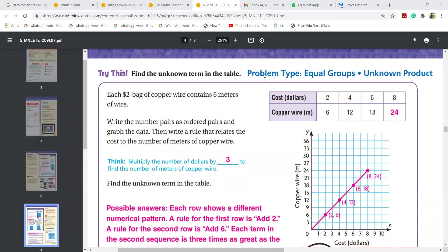It's okay. Now the cost: two, four, six. That means you're adding plus two, plus two. Six, twelve, eighteen, you're adding six, six, six, six. What is the relation between two and six? Two times what gives me six? Two times three. Four times three is twelve. Six times three is eighteen. Eight times three is twenty-four. So that means you have to multiply the number of dollars by three to get the copper wire.